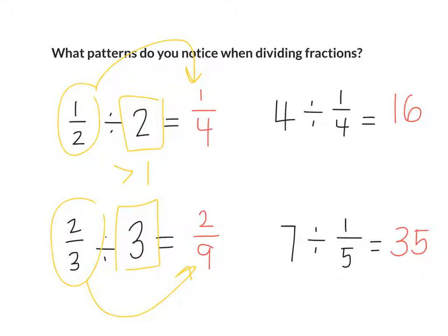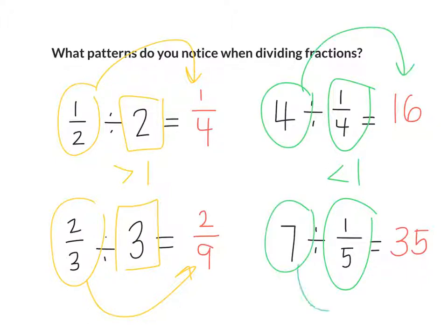Now over here my divisor is what? One-fourth and one-fifth. How do those divisors compare to one? Less. They're less than one, these divisors right? And what happens to my whole? Does it get bigger or smaller? Interesting. So it seems like there's a pattern. When I'm dividing by a number greater than one the number gets smaller, and when I divide by a number smaller than one the quotient gets bigger.